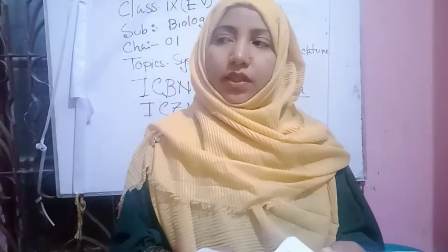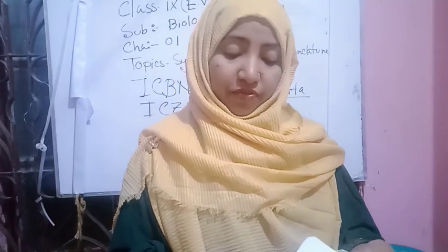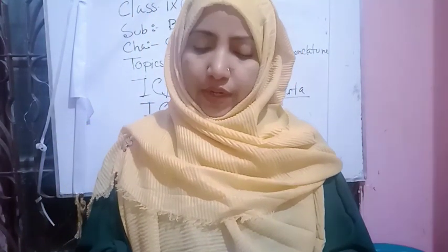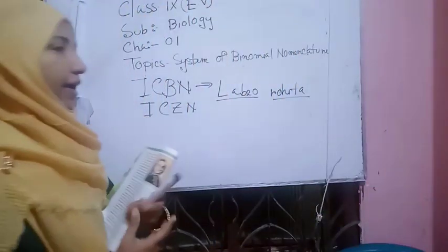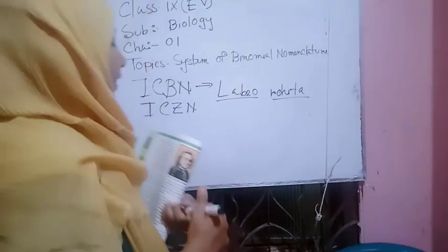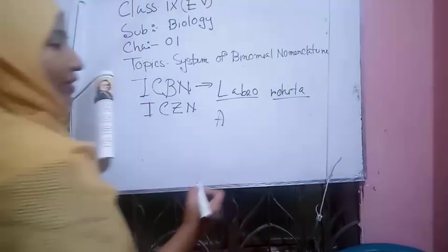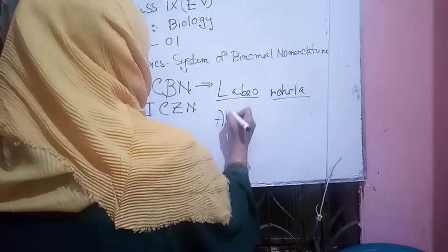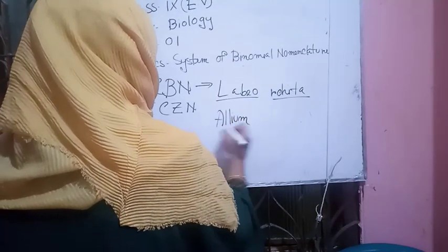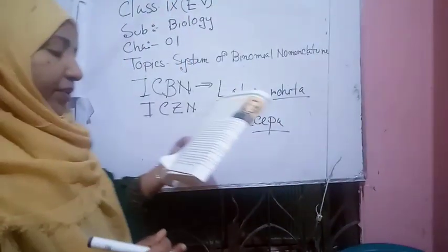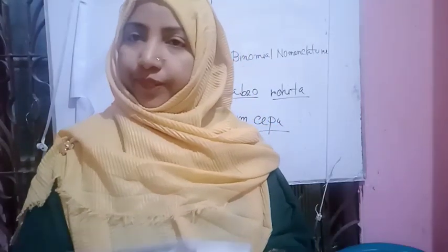Rule four: the first alphabet of the first part (genus) would be a capital letter, with the remaining alphabets in small type. The second part (species) would be entirely in small letters. For example, onion is Allium cepa — Allium starts with a capital letter. Lion is Panthera leo — Panthera starts with a capital letter, and leo is all small letters.